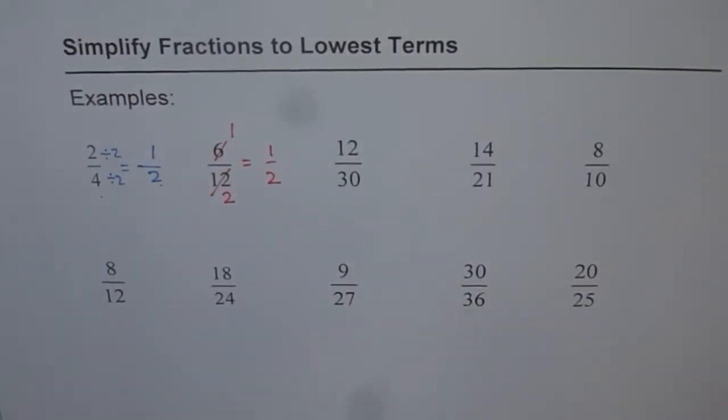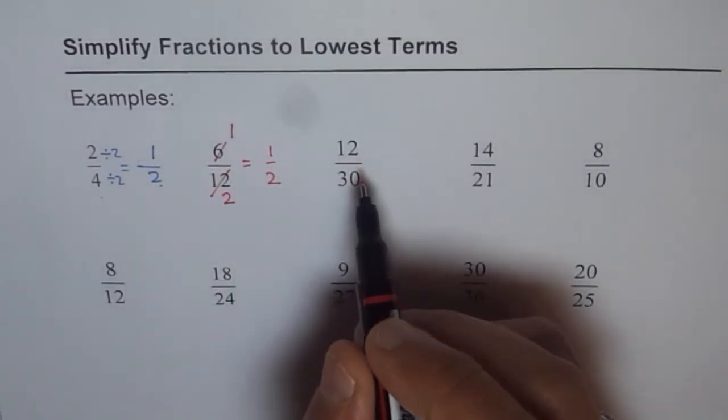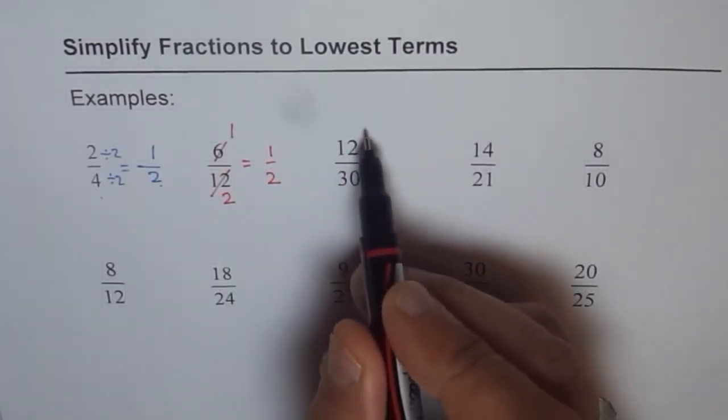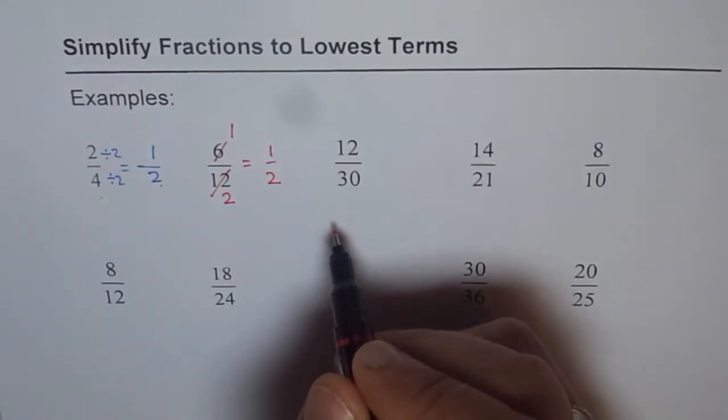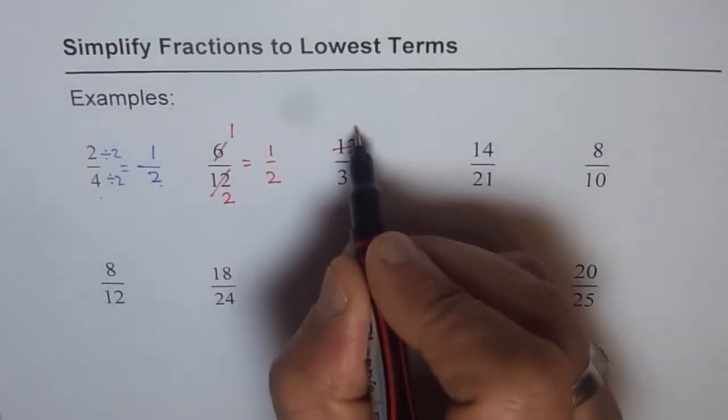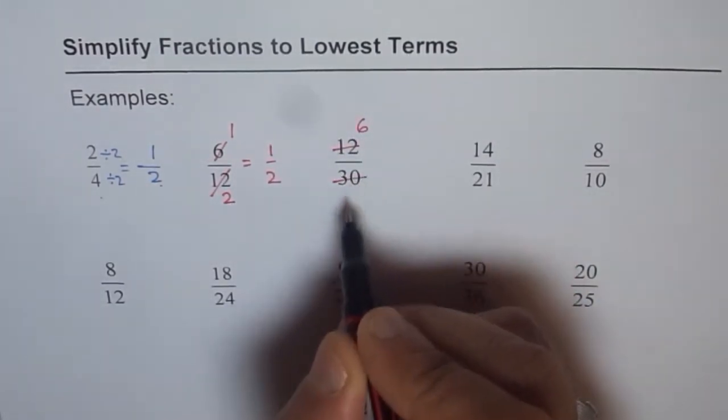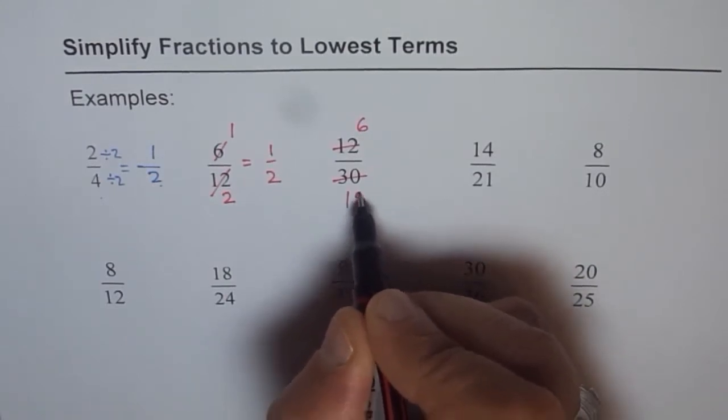Now let's do the next one using this technique where I will divide and write my answer right there. So 12 over 30. So can you suggest what number to start with? It should be 2. Both are even. 12 divided by 2 is how much? 6. How about 30 divided by 2? Half of 30. That is 15.